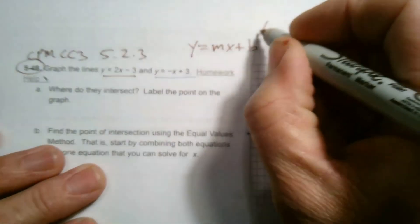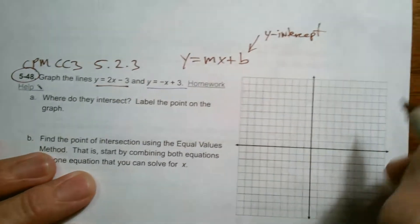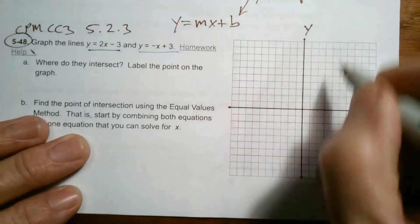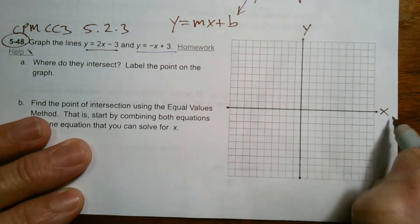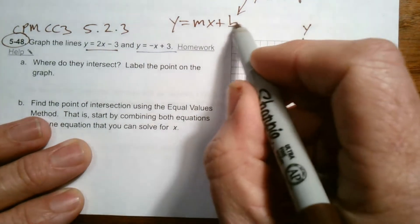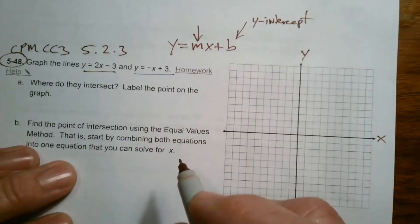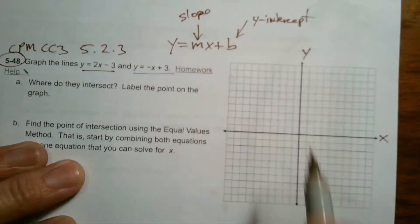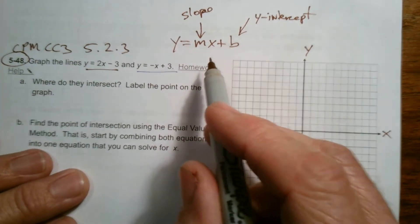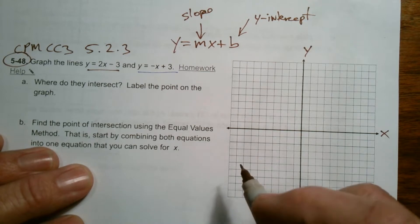Since both equations are in the form y equals mx plus b, that helps us out. The b is the y-intercept — it's where the line crosses the y-axis, the vertical axis. The horizontal axis is the x-axis. The m, the coefficient in front of the x, is always the slope, or the growth rate. It gives a sense of how the line is growing from point to point.